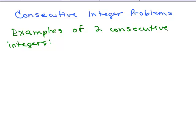I'm going to cover consecutive integer problems. Let's start off with examples of two consecutive integers. Consecutive means just one after the next. So if the first one is 5, the next number would be 6. Those are two numbers in a row. How about 10 and 11? Those are two consecutive integers. You could also have a negative number, like negative 8 and the next number after negative 8 would be negative 7. Think of the number line.